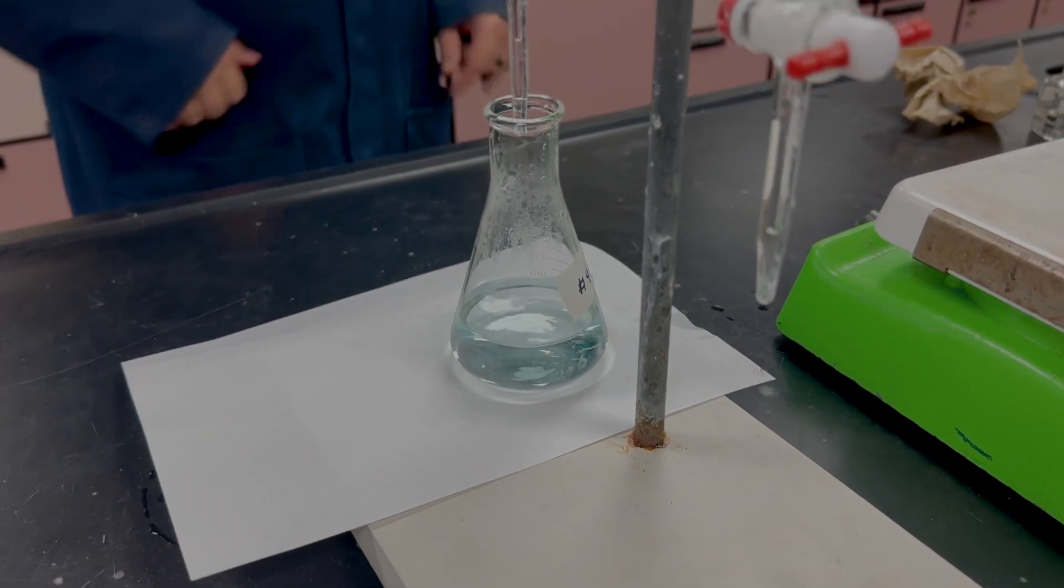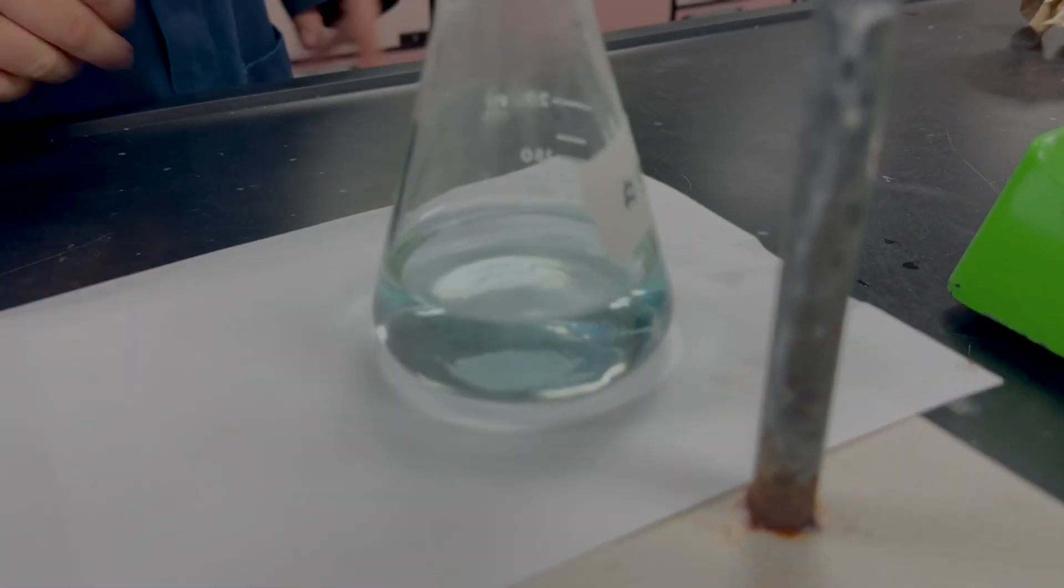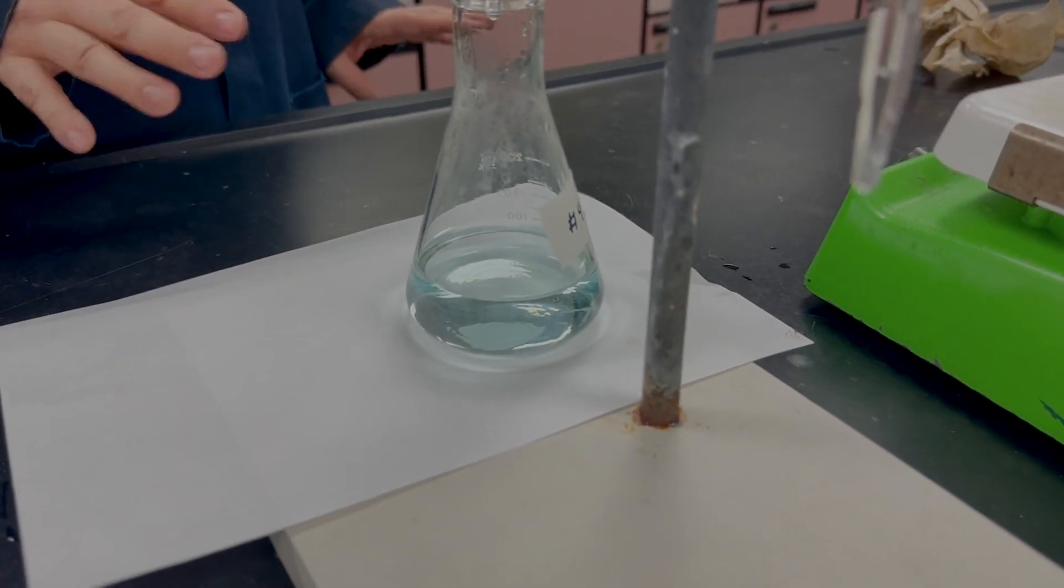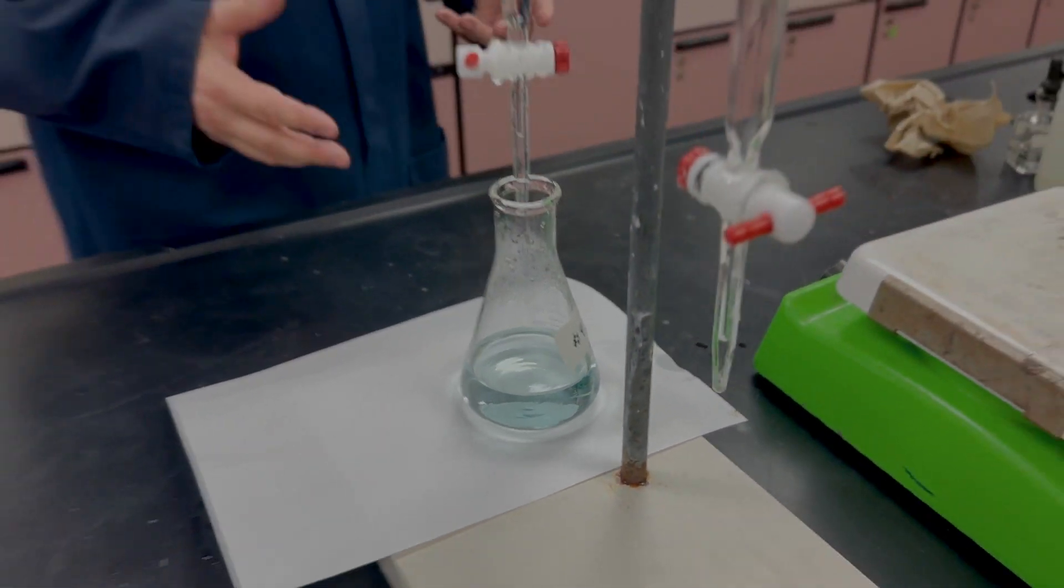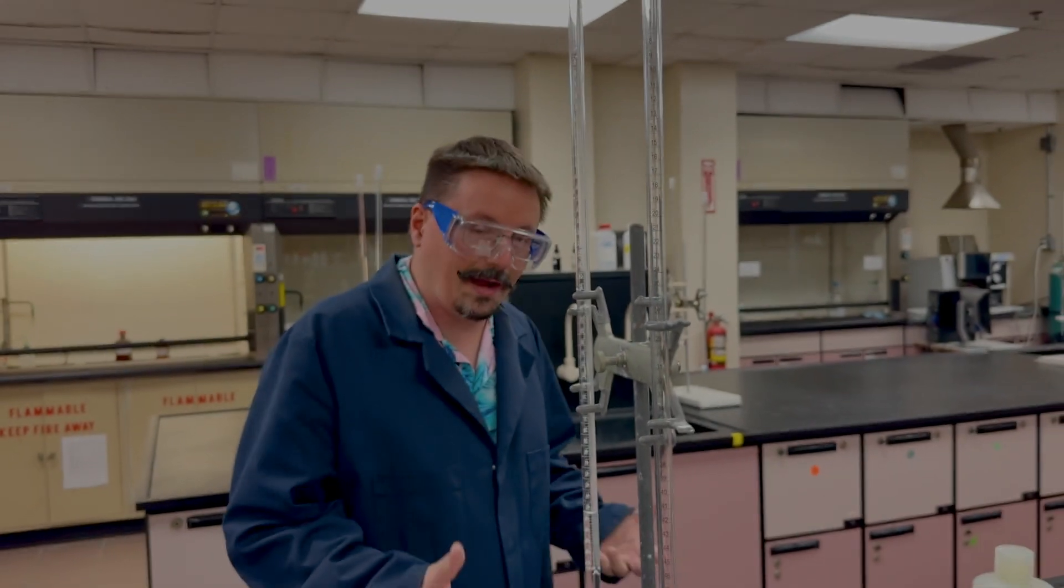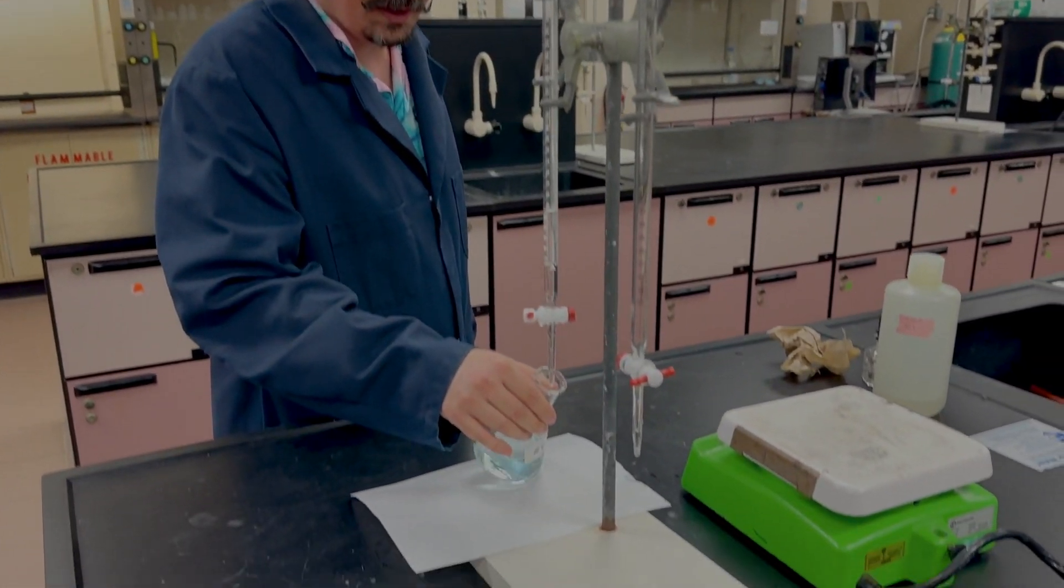You can see it's a faint green aqua color. Because it's relatively light, if you go a little too far you'll go all the way to that yellow. That's okay - you may not have necessarily over-titrated.